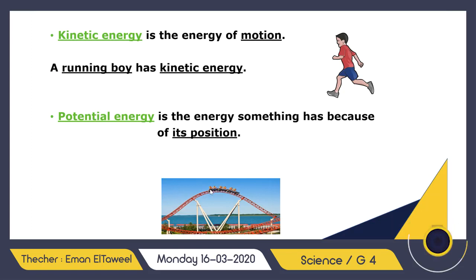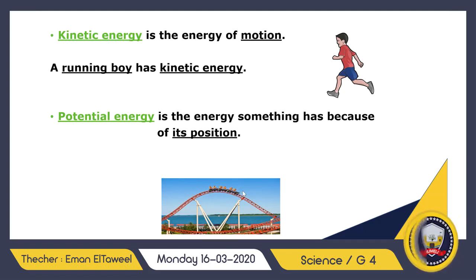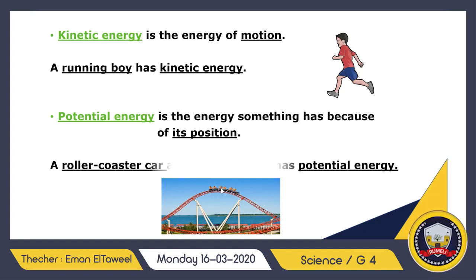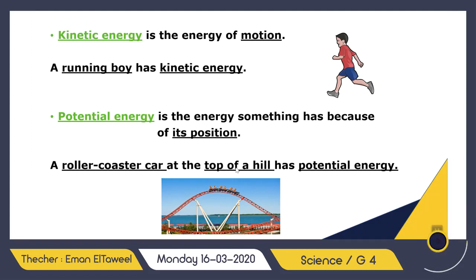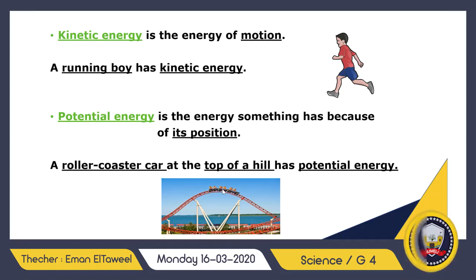For example, do you know roller coaster cars? At the top of the hill, the cars are standing still and not moving — they are storing energy called potential energy. When they start to slide down, that potential energy changes to kinetic energy. So when they are moving, they have kinetic energy, but when standing at the top of the hill, it is potential energy.